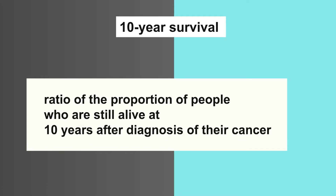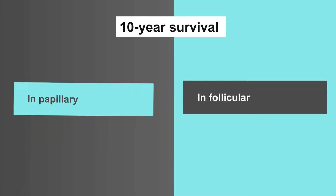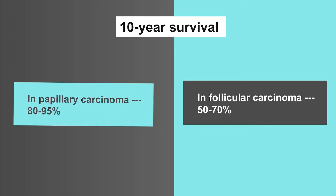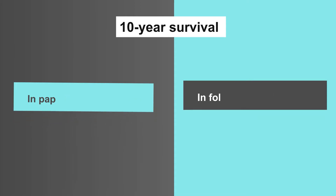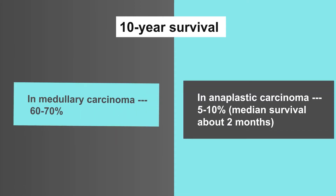Feature number ten is 10-year survival, which means the proportion of people still alive at 10 years after diagnosis. In papillary carcinoma, 80-95%. In follicular carcinoma, 50-70%. In medullary carcinoma, 60-70%. In anaplastic carcinoma, 5-10%, with a median survival of about two months.